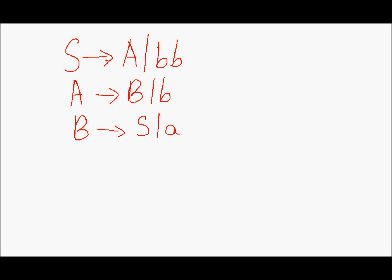I am Saud and in this video we shall remove unit productions from this grammar. In this grammar we have three productions: symbol S produces symbol A as well as terminal string DB; symbol A produces symbol B as well as terminal b; and symbol B produces symbol S as well as terminal A.